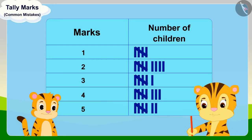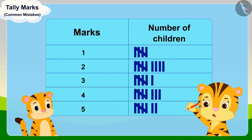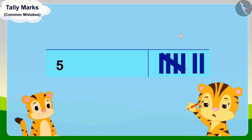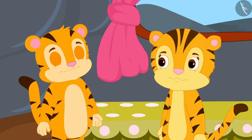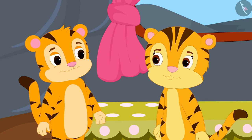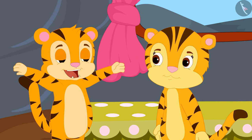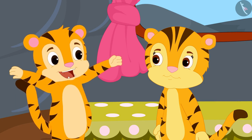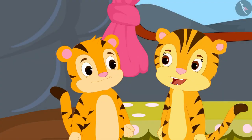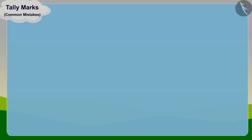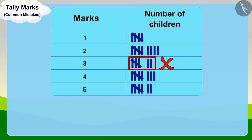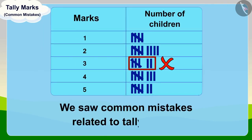Mrs. Khan said to Sher Khan, look, son, seven children in your class got five out of five marks. Upon hearing this, Sher Khan promised Mrs. Khan that next time he too will study more diligently and get the highest marks in the class. Mrs. Khan became very happy and hugged Sher Khan. Children, in this video we saw common mistakes related to tally marks.